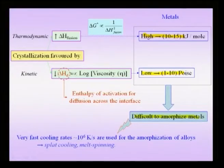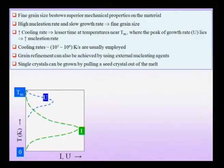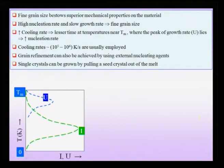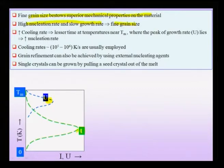Using our TTT diagram knowledge, can we engineer the microstructure of an amorphous ceramic to obtain properties not found in pure glass or pure ceramic? We note that a fine grain size bestows superior mechanical properties — a high nucleation rate and slow growth rate give fine grain size. We have already noted that the peak of the growth rate curve lies at higher temperatures than the peak of the nucleation rate.